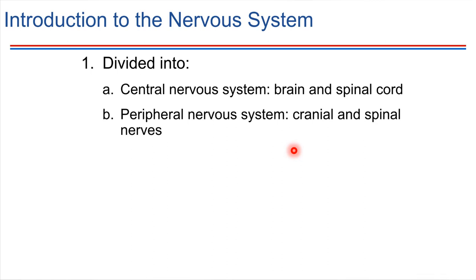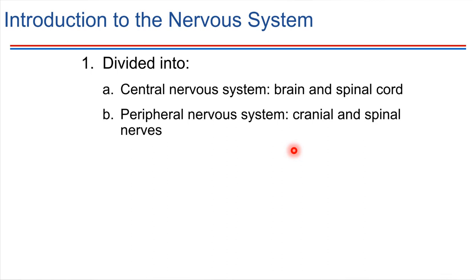As far as the tissue goes, the tissue that makes up the nervous system, there are going to be two major cell types that we will be looking at. First are neurons — these are really the key players. Neurons are the cell type that's able to conduct electrical impulses. We'll be seeing how that happens a little bit later on.